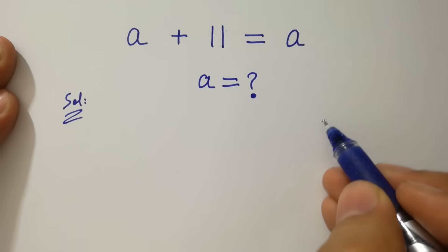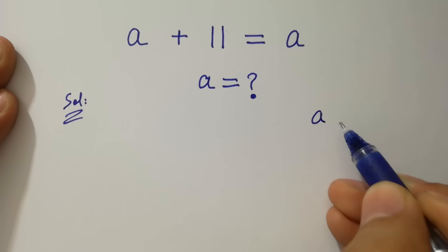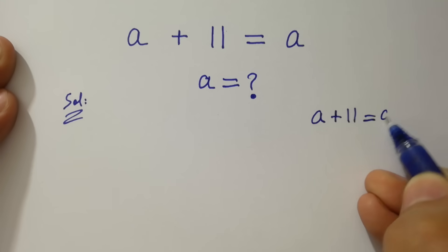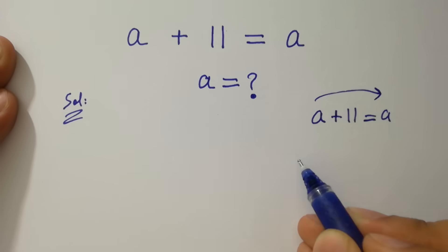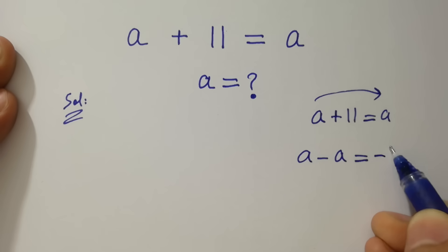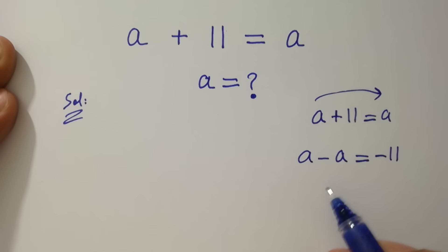If you see a plus 11 equal to a, then a minus a will be equal to minus 11. a minus a is 0, which does not equal to minus 11.